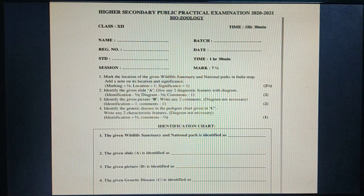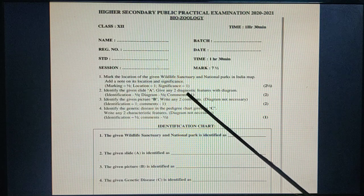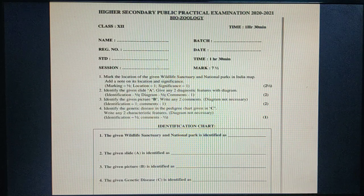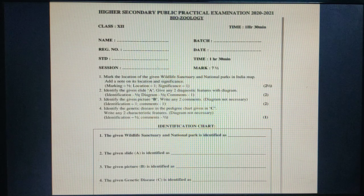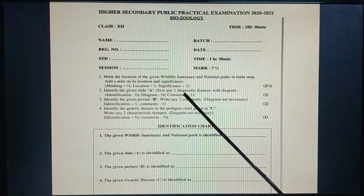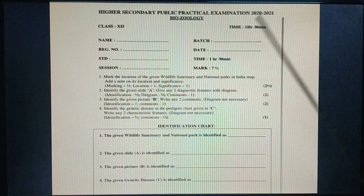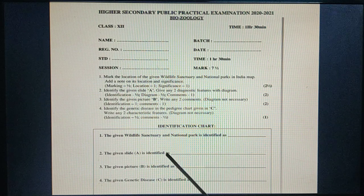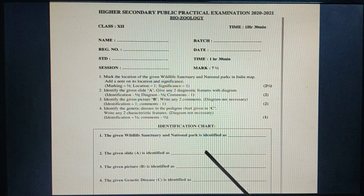Second question A: identify the given slide and give any two diagnostic features with the diagram. Since the microscope should not be used in the public practical examination according to the SOP during the pandemic, we won't keep the microscopic slide. Instead, we show a picture. You identify the picture and write the name — either lymph node, human sperm, human ovum, or Entamoeba histolytica.